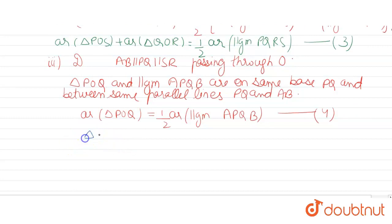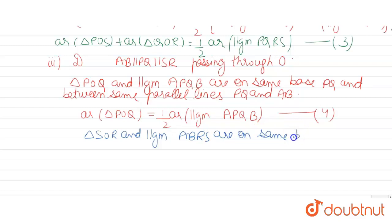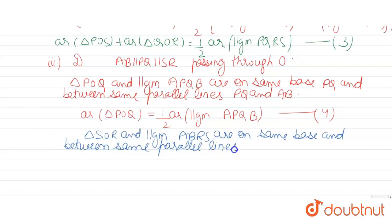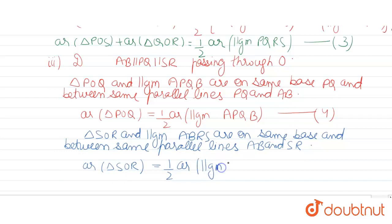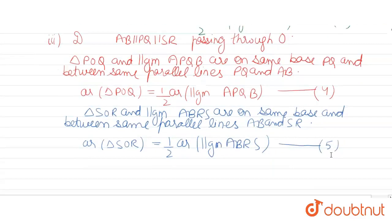Then: triangle SOR and parallelogram ABRS are on the same base SR and between the same parallel lines AB and SR. So according to the above-mentioned theorem, area of triangle SOR is equal to half of area of parallelogram ABRS. Mark this as number five.